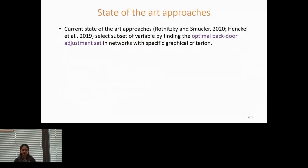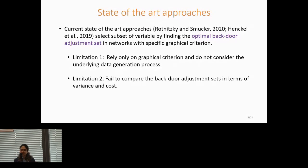Current state-of-the-art approaches select a subset of variables by finding the optimal backdoor adjustment set, and they work in networks with specific graphical criterion. Their approach is limited because they rely only on graphical criterion. They do not consider the underlying data generation process, so they fail in many cases that are common in biology with specific graphical structures. And their second limitation is that they fail to compare the backdoor adjustment sets in terms of variance and cost. They either output the optimal adjustment set, or they fail to do so. And finally, they are rarely applicable in experiments with a limited number of biological replicates.